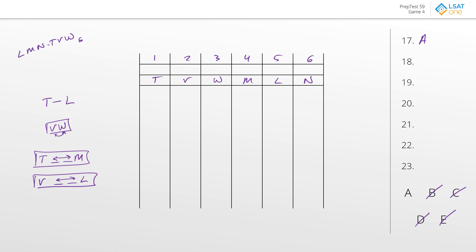Most questions are global except number 21, so let's look at 21 first. If M is in year one, T has to be exactly two spaces apart, so T goes into position four. T is before L, so L shows up somewhere after position four. V and W have to be next to each other, so they'll occupy positions two and three.